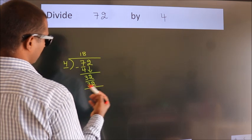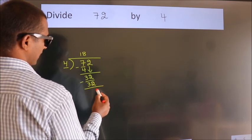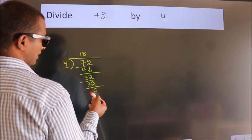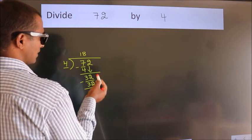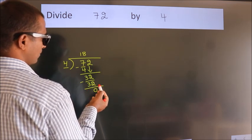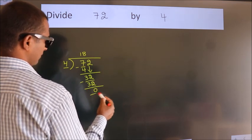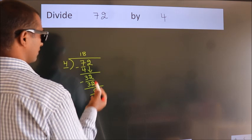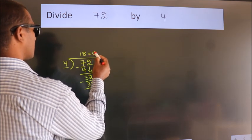Now we subtract. We get 0. After this, no more numbers to bring down, and we got remainder 0. So this is our quotient.